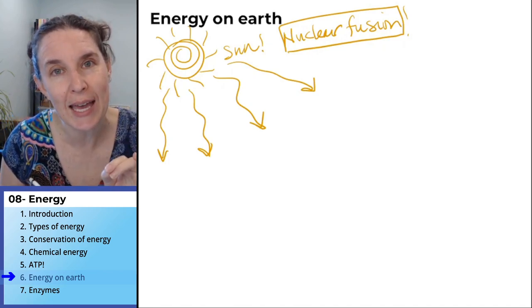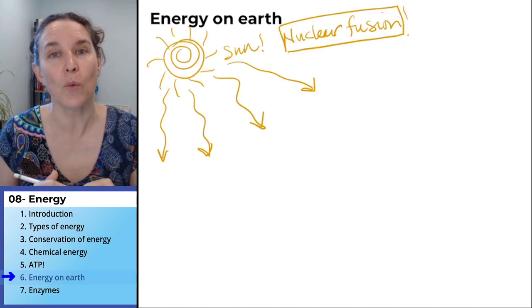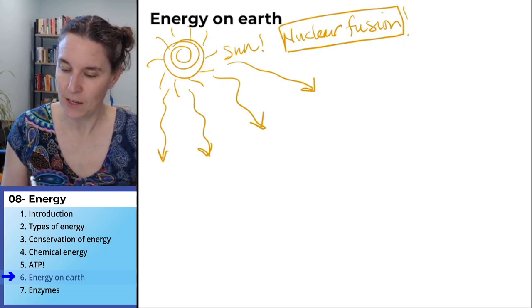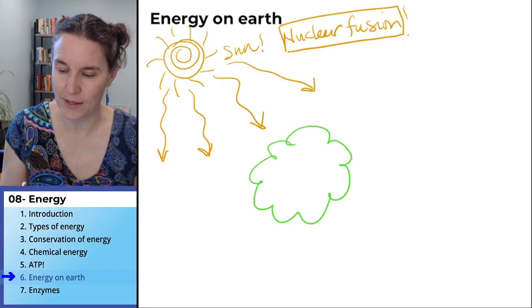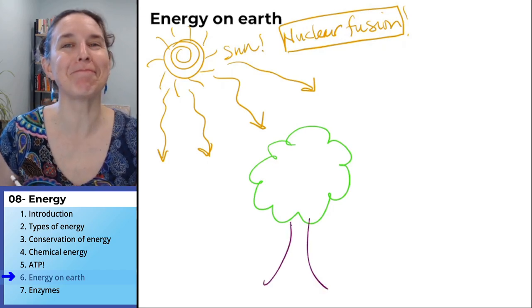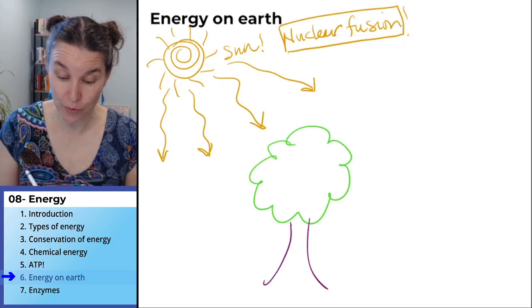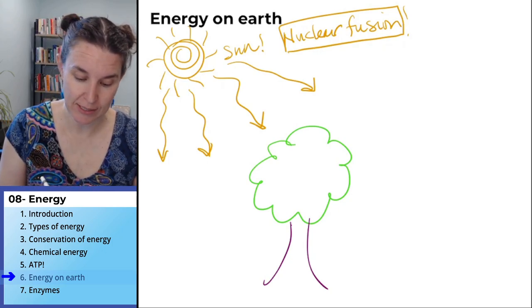But who can do something with sunlight energy? Here's our Pictionary game. Who is this? Plants! Plants go through the process of photosynthesis.